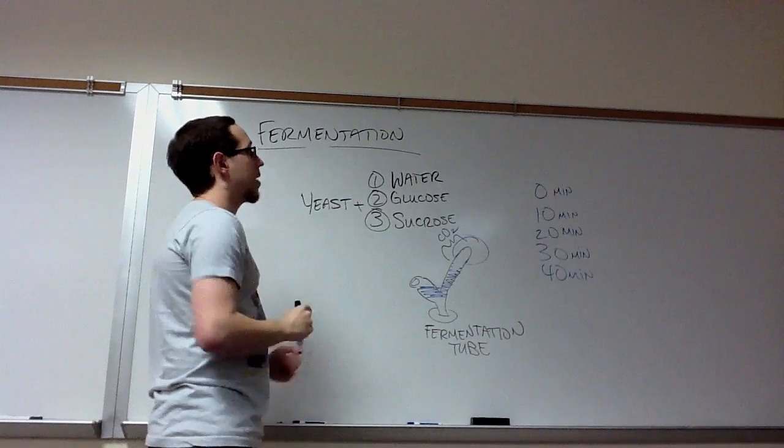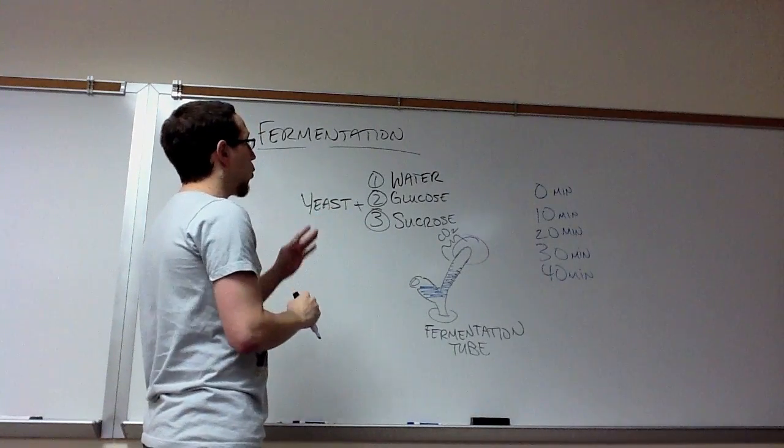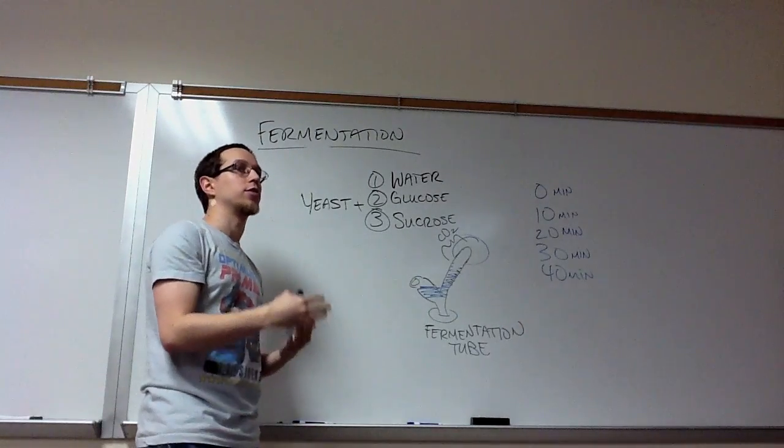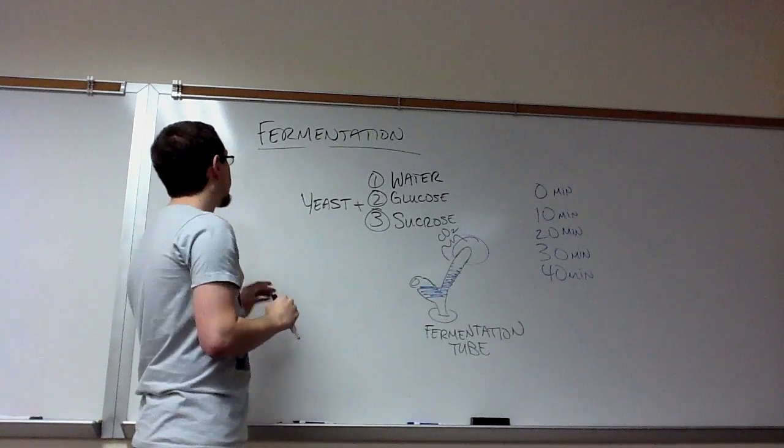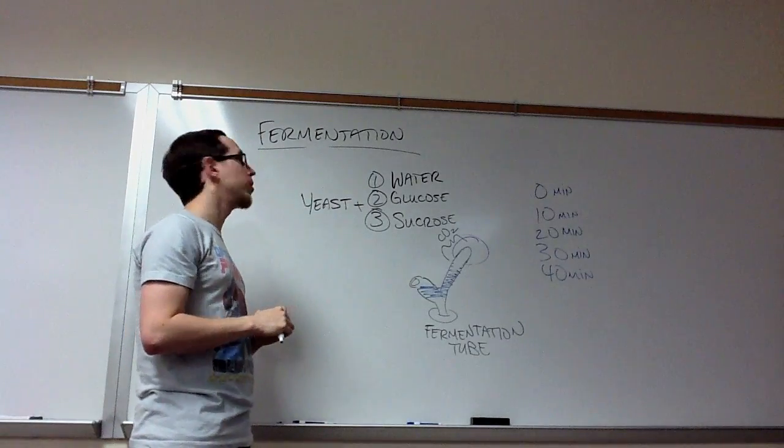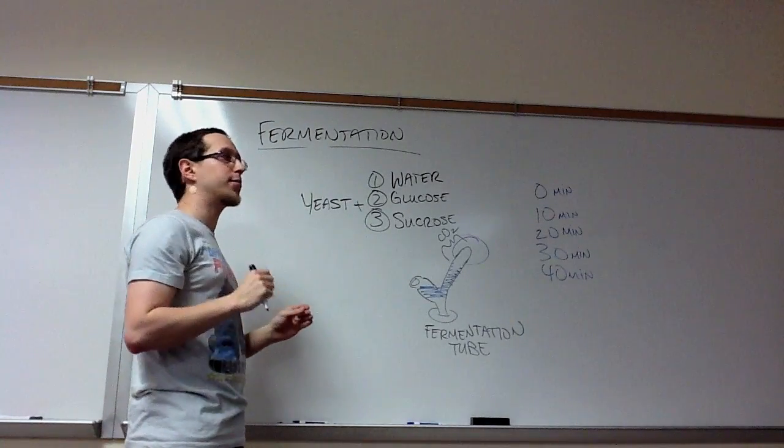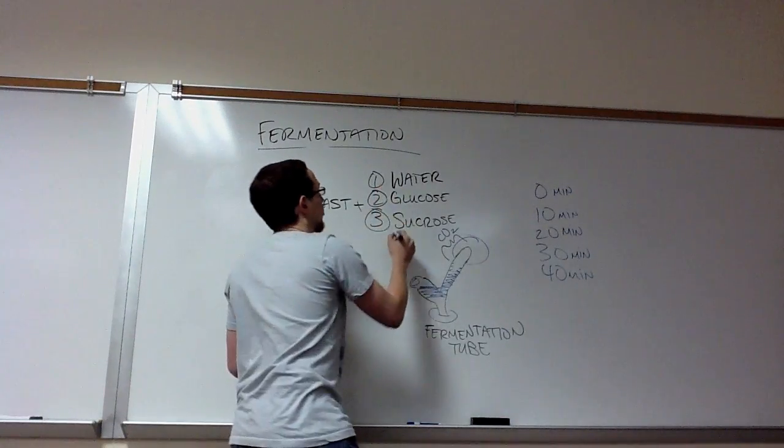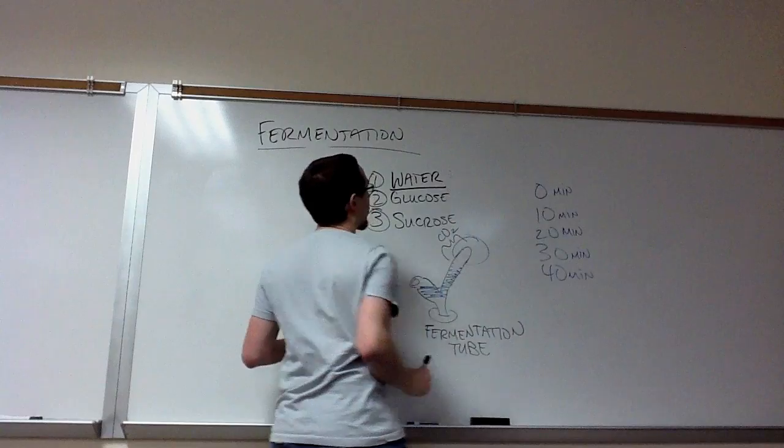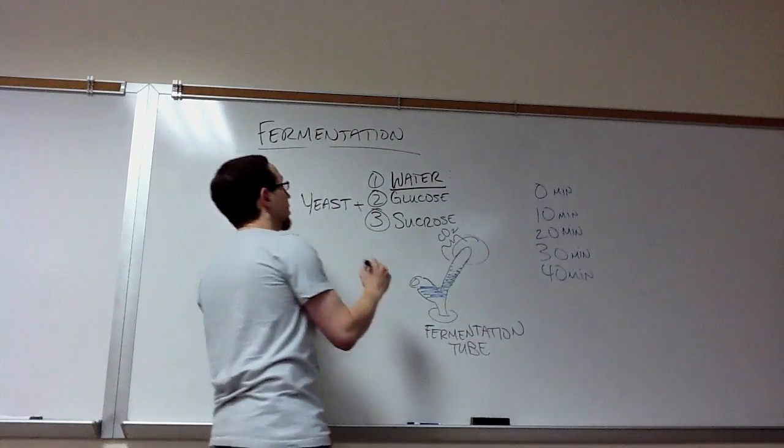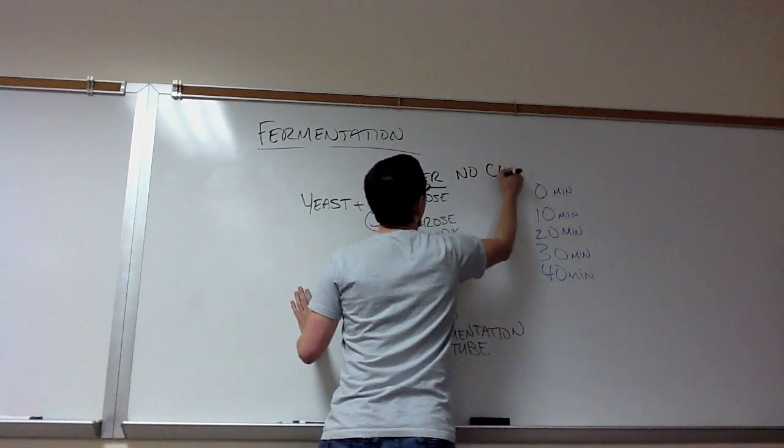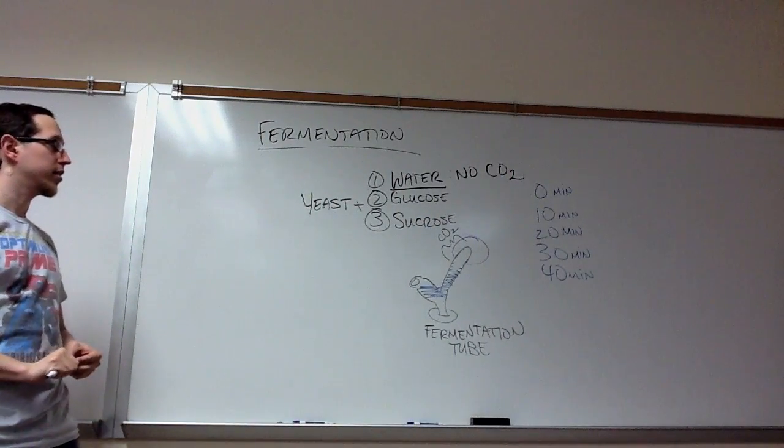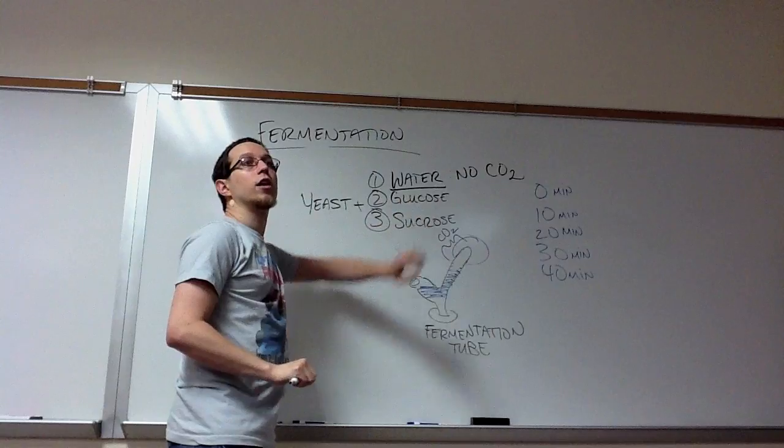When thinking about this, we need to first ask ourselves, which of these solutions do we know for a fact is not going to result in the production of ethanol? Remember, just like in glycolysis, you're going to need to start with some form of potential energy or chemical energy stored in a macromolecule. The only one of these three solutions that does not have that is water. And so, you do not see any carbon dioxide produced in the water tube because it is lacking that source of initial energy.